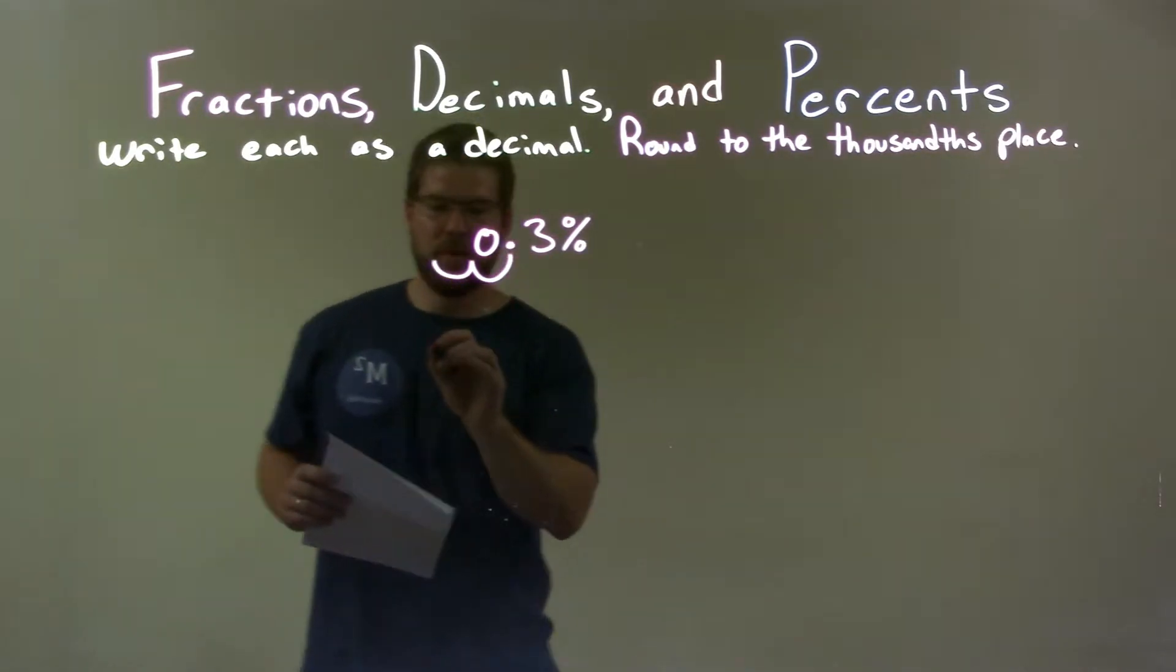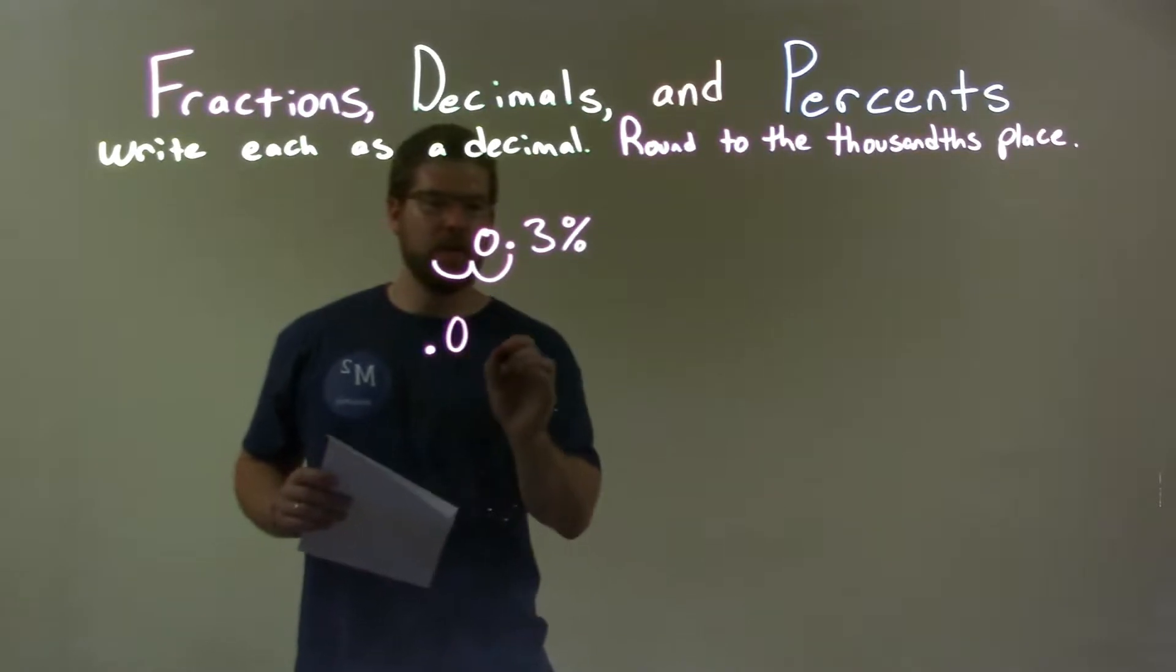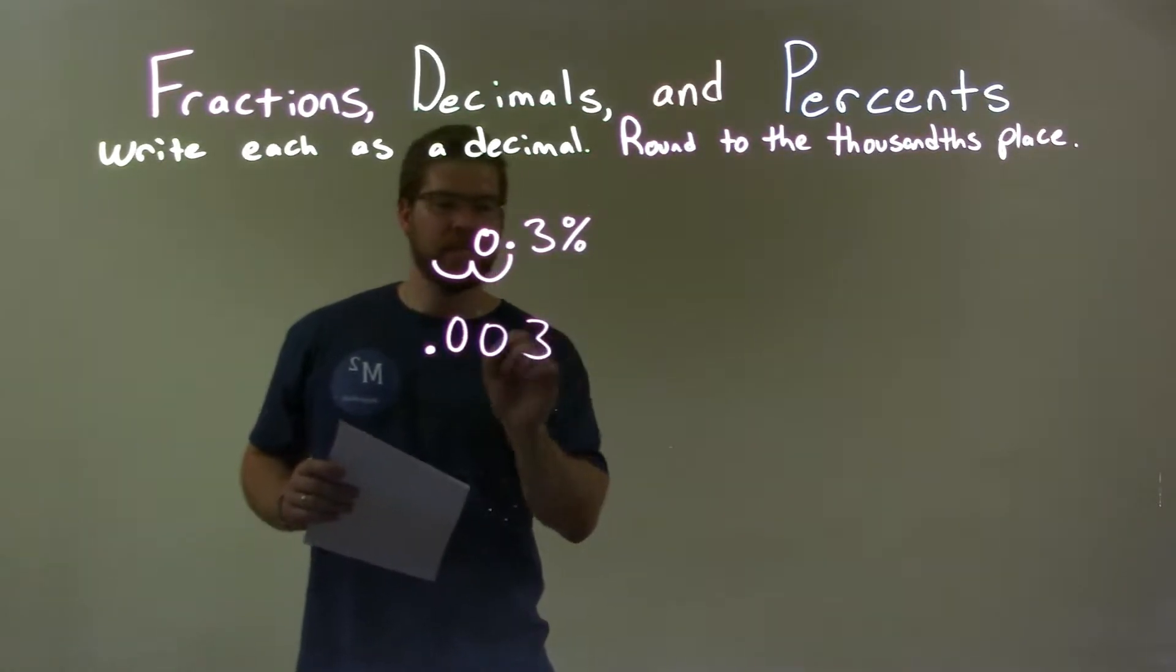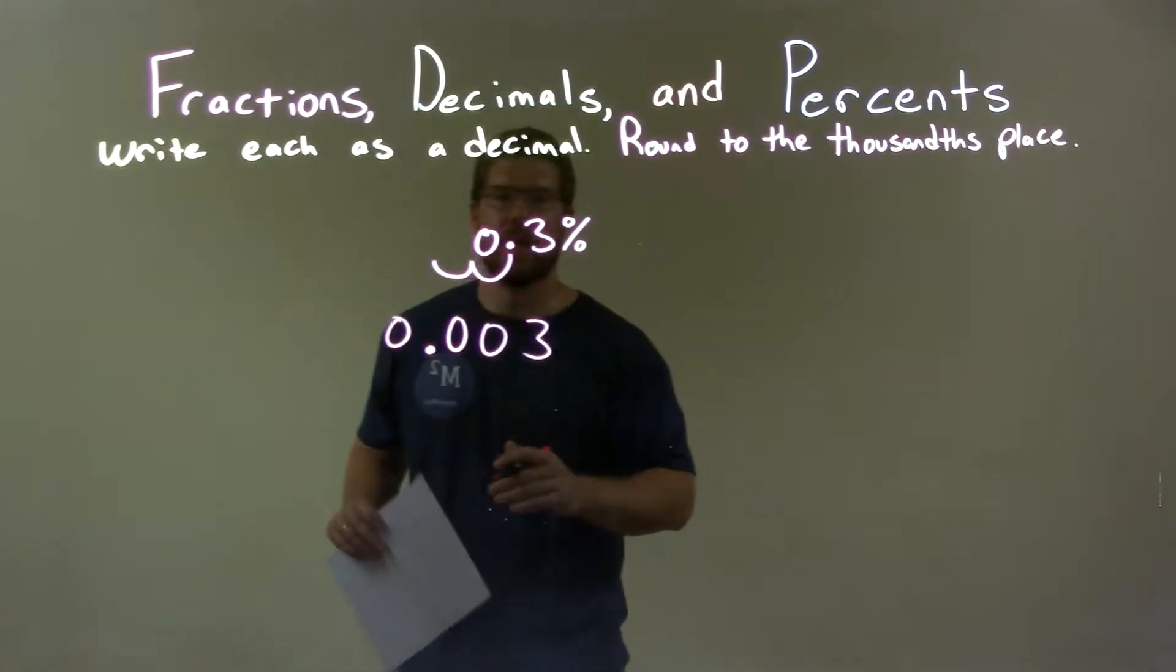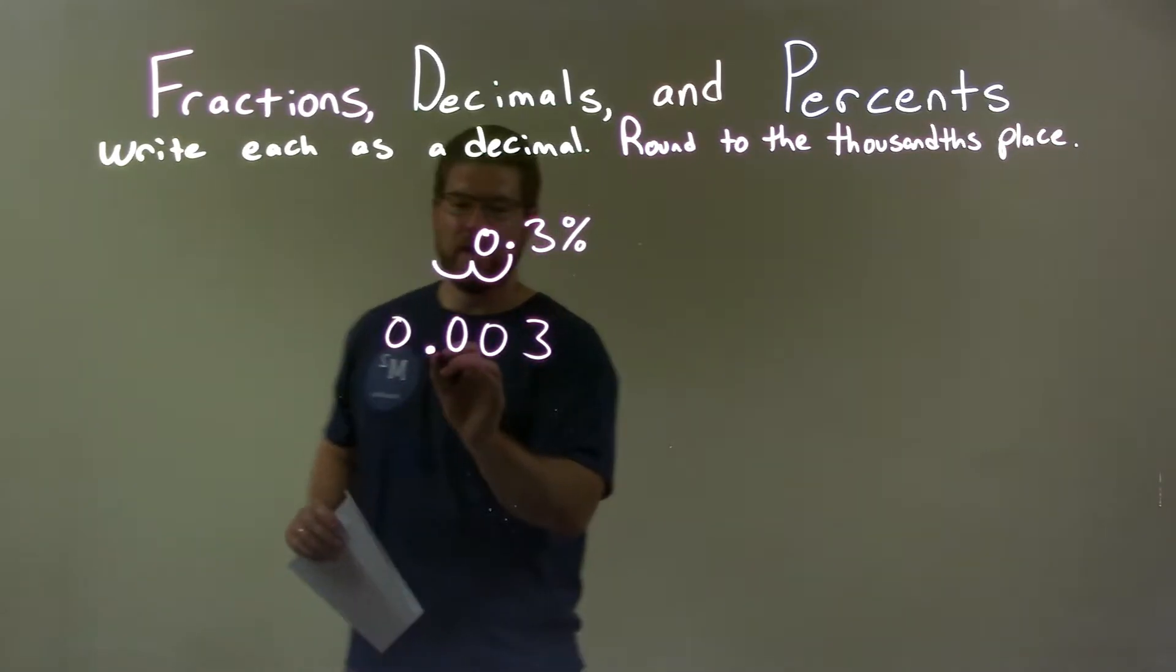That creates another zero. So we have a decimal here, zero that's created, zero, three, and then I put a zero up front just to show where the decimal is. It makes it a little easier to see.